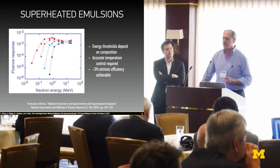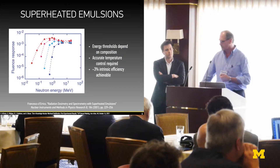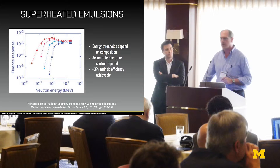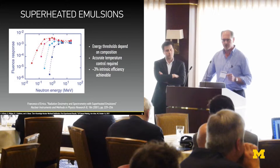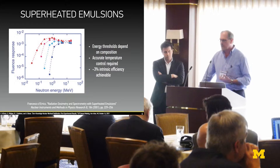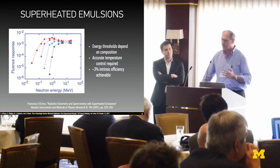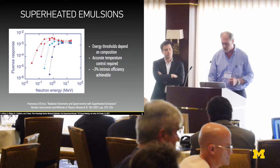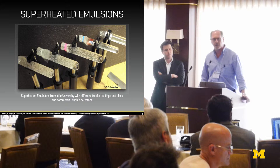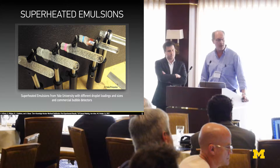They do not achieve the intrinsic efficiencies you can get from scintillators—far from those levels, even far from well-moderated helium-3 counters. But we can already achieve around 3% efficiency for fast neutrons, and we think we can hit 5%. For these applications, sensitivity is not really a key requirement—we have plenty of neutrons to work with. We can make them with different sensitivities. What you see here are a series of detectors we have made.